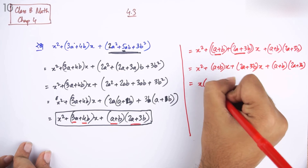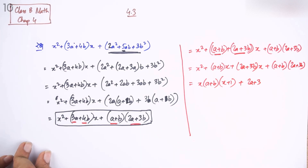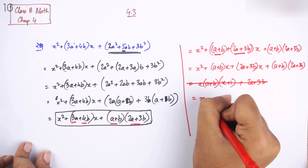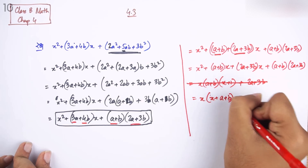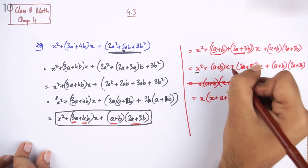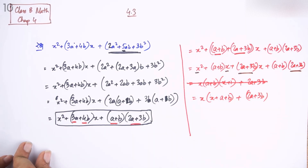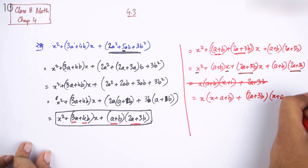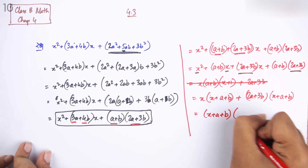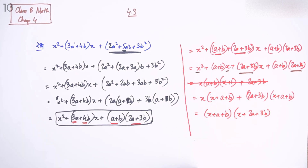So, x plus a plus b is a common factor. Therefore, x plus a plus b is taken out as common. What remains? x plus twice a plus thrice b is also a factor. So the final factored form is: x plus a plus b, into x plus twice a plus twice b.